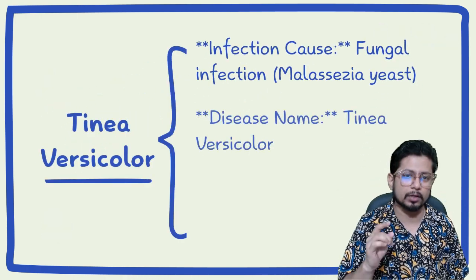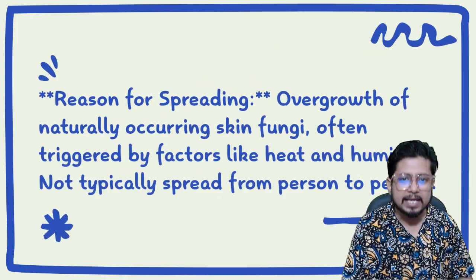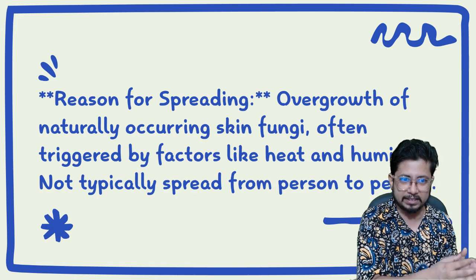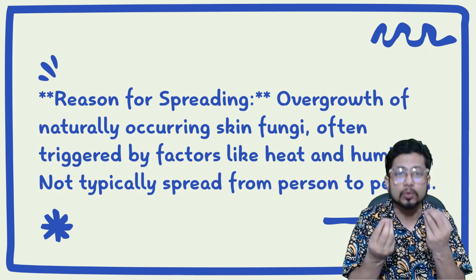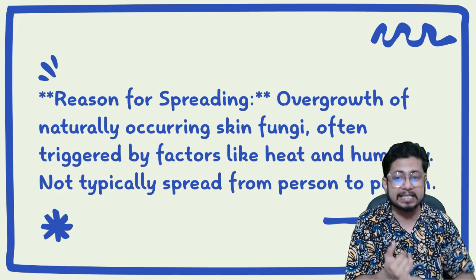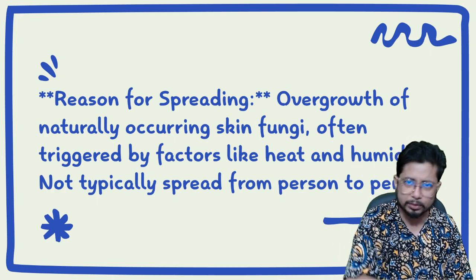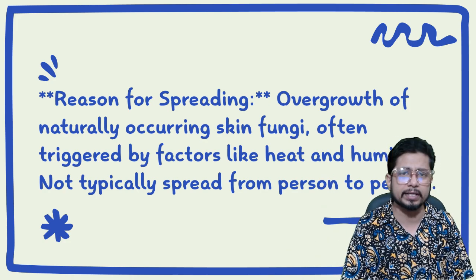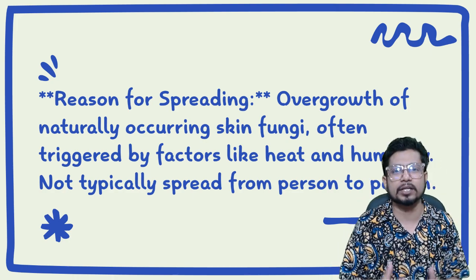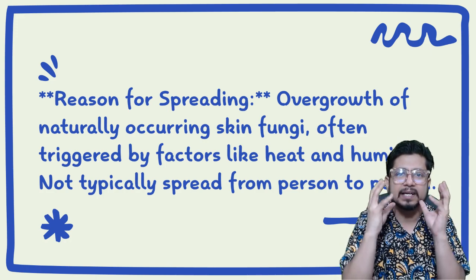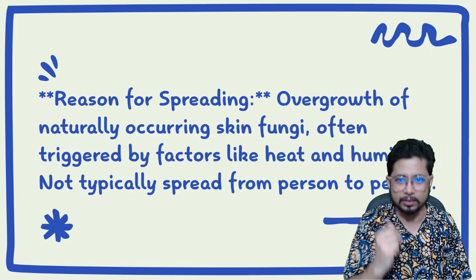The name of the disease is Tinea Versicolor infection. It spreads due to the overgrowth of this naturally occurring skin fungus. It always tries to grow on the skin, but is often triggered by factors like heat and humidity — temperatures ranging from 32 to 38 degrees Celsius and relative humidity above 75 to 80 percent. This hot and humid environment is loved by most fungi, including this one.